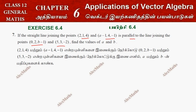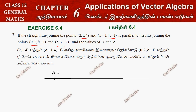We have a diagram and we have a straight line. We have two points. One point is (2, 1, 4) — this is point A. The other is (-1, 4, -1) — this is point B.